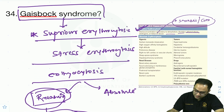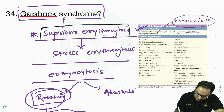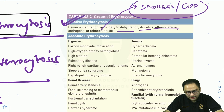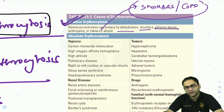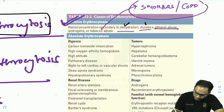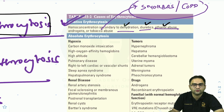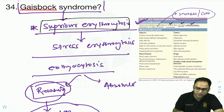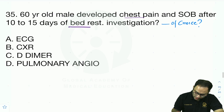Gaisbock syndrome is basically spurious erythrocytosis — a relative erythrocytosis. Erythrocytosis is categorized as relative (hemoconcentration from dehydration, diuretics, alcohol, or smoking/tobacco use) versus absolute (increased RBC mass). Gaisbock syndrome is the spurious or relative erythrocytosis due to hemoconcentration — a one-liner repeat question in the exam.